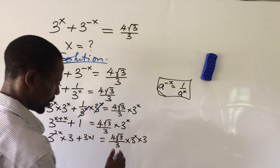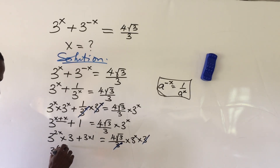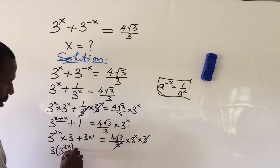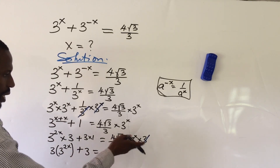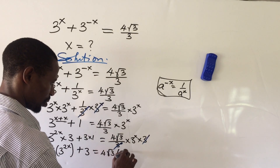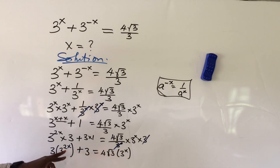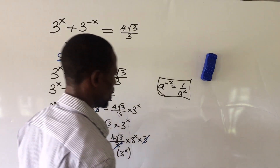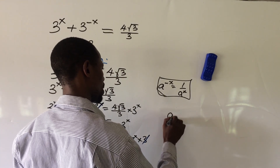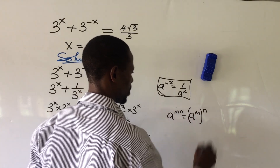From here, this 3 cancels with this 3. We can rewrite this as: 3 times 3 to the power of 2x plus 3, equals 4 root 3 into 3 to the power of x. We can also rewrite 3 to the power of 2x by bringing out 3 to the power of x, according to the law of indices which says a to the power of m times a to the power of n equals a to the power of m plus n.